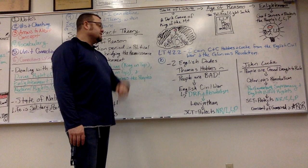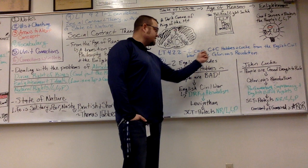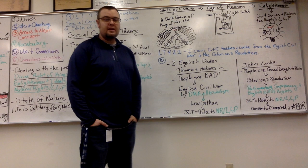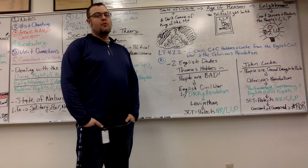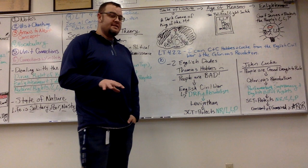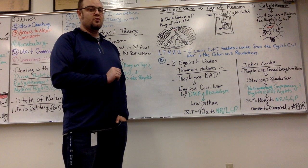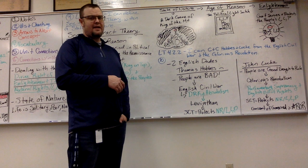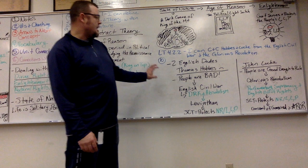New learning target, though. In order to do that, we have learning target 4.2.2. And it talks about comparing and contrasting, that's what C and C means, Hobbes and Locke from the English Civil War and the Glorious Revolution. These guys are a product of their time period, and we need to understand how and why. We have two English guys. Thomas Hobbes comes first in the 1650s and 60s during the English Civil War. John Locke will come second. He's in the 1680s during the Glorious Revolution. We have two revolutions in England that happen right on top of each other.